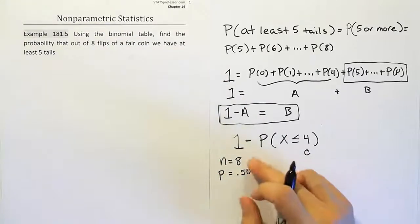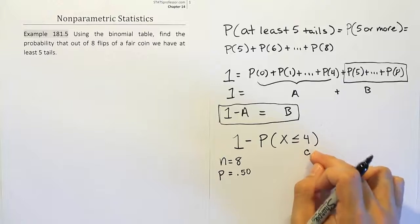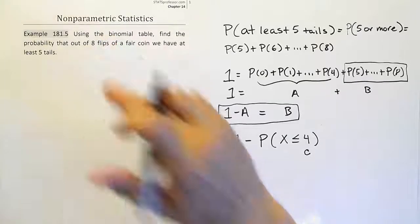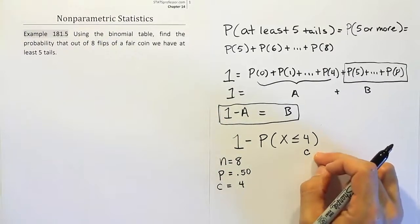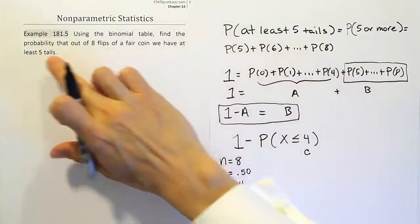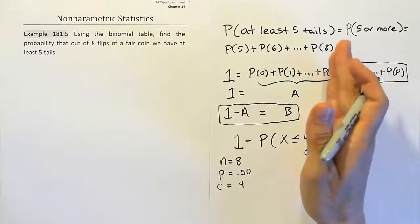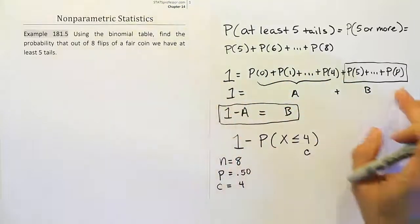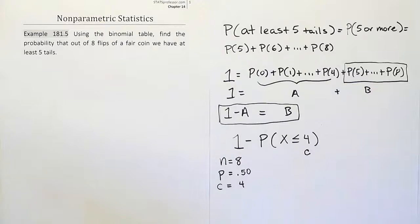And then after that, the last thing I need to have is this quantity c here. c is a value we're going to look up for the binomial table. And in this case, it turns out to be one minus the value they started out by giving me, which is five. And the reason why is because we're going to go from four to zero, which is all the probability I don't want. I'll subtract that from one, leaving me with everything that I do want.